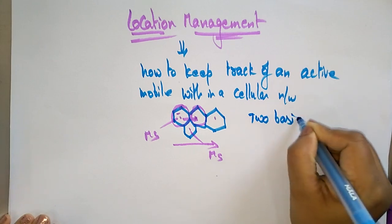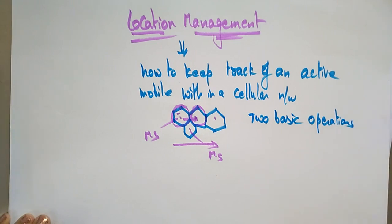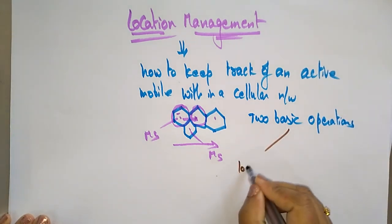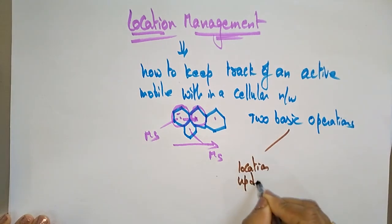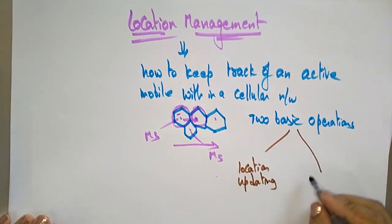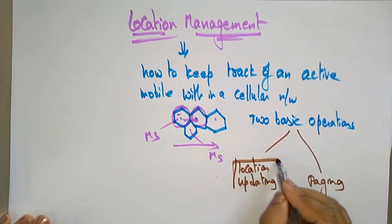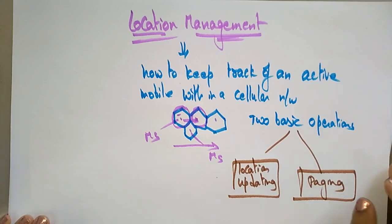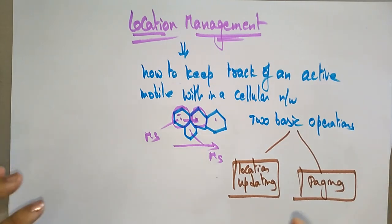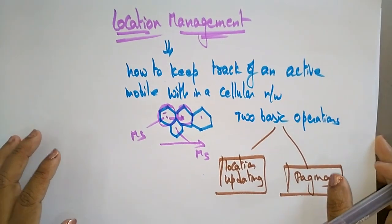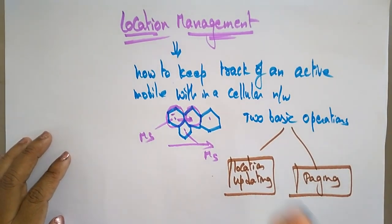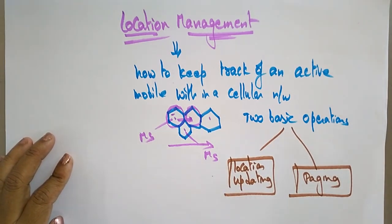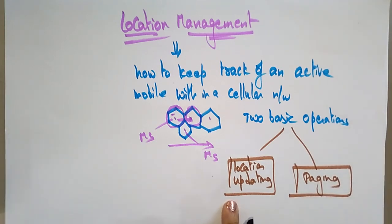There are two basic operations of location management. The first is location updating and the second is paging. Because of these two operations, your mobile location is managed, your call is not disconnected, and your internet is not disconnected. Location management deals with location updating — whenever you move from one station to another, your location keeps on updating.